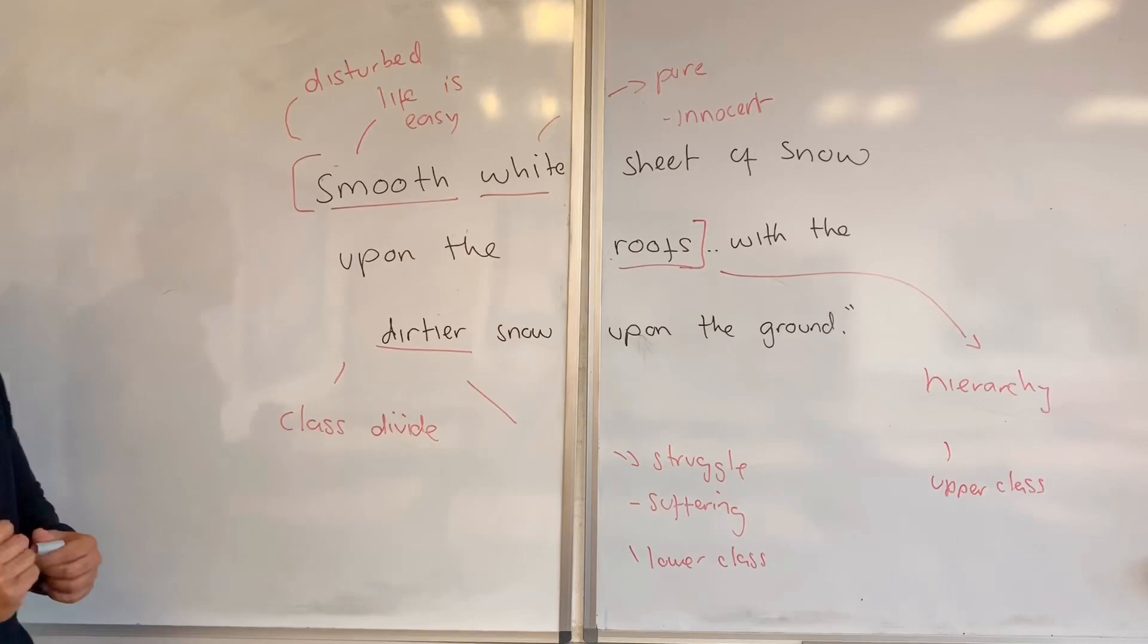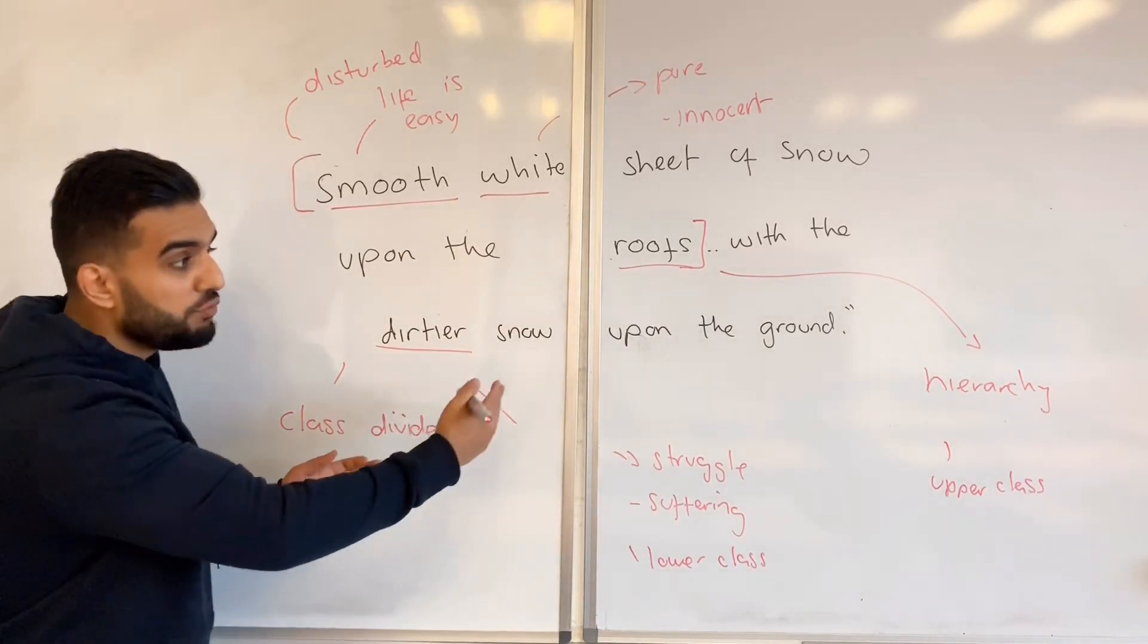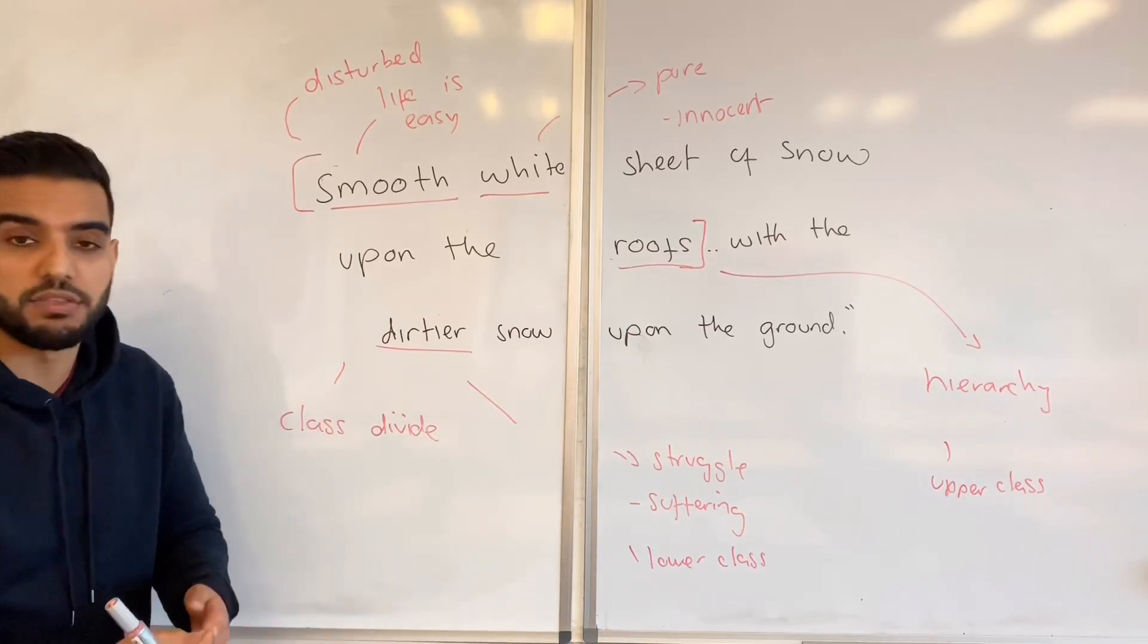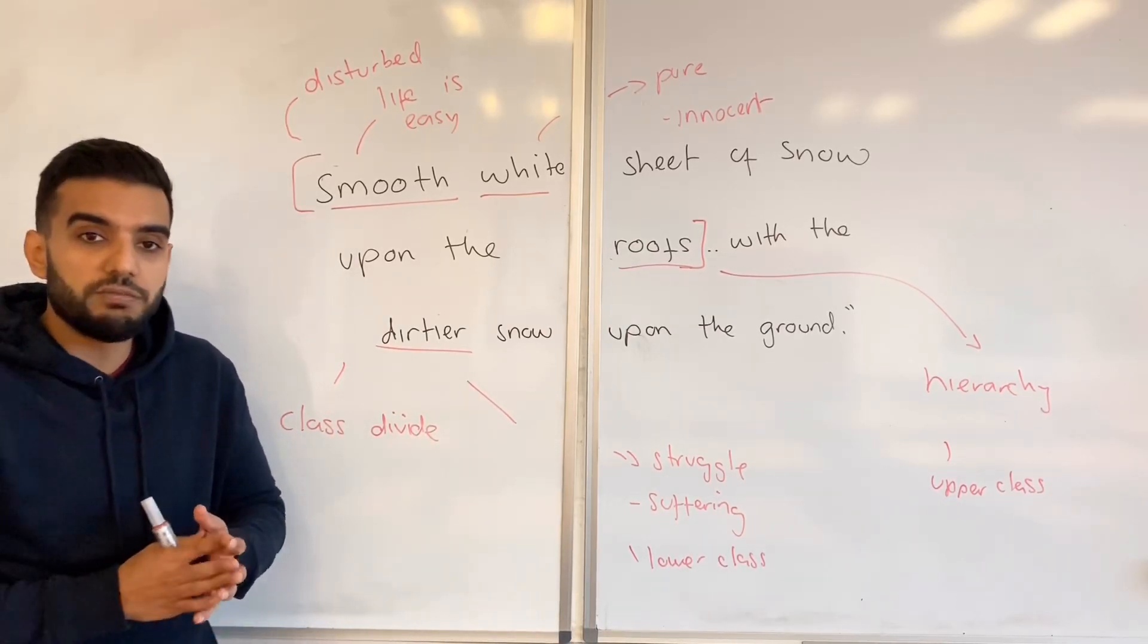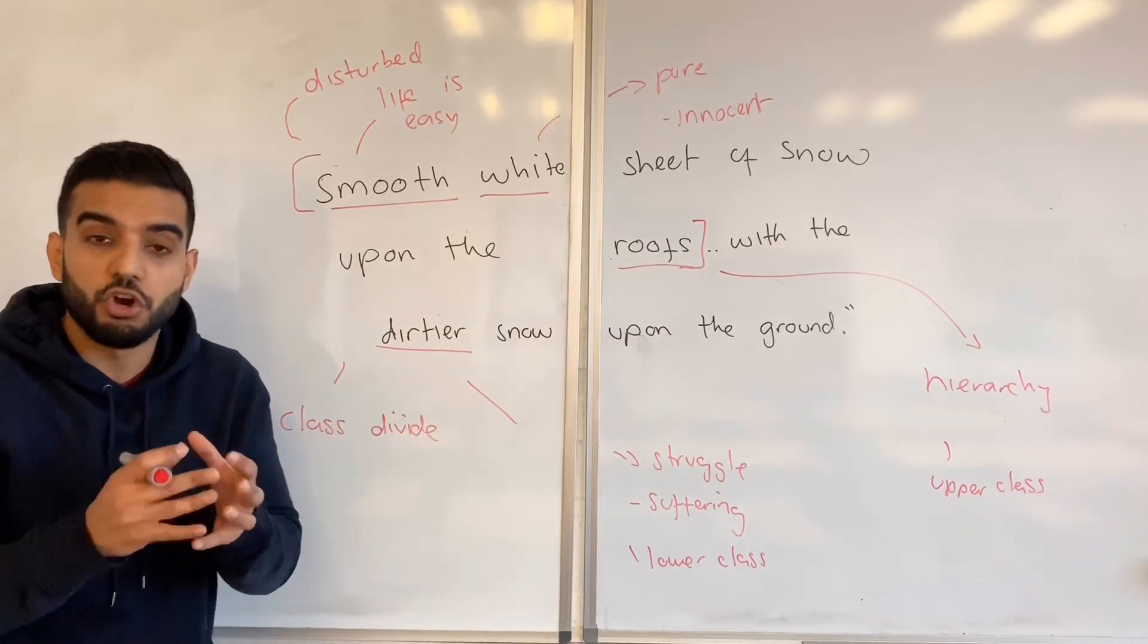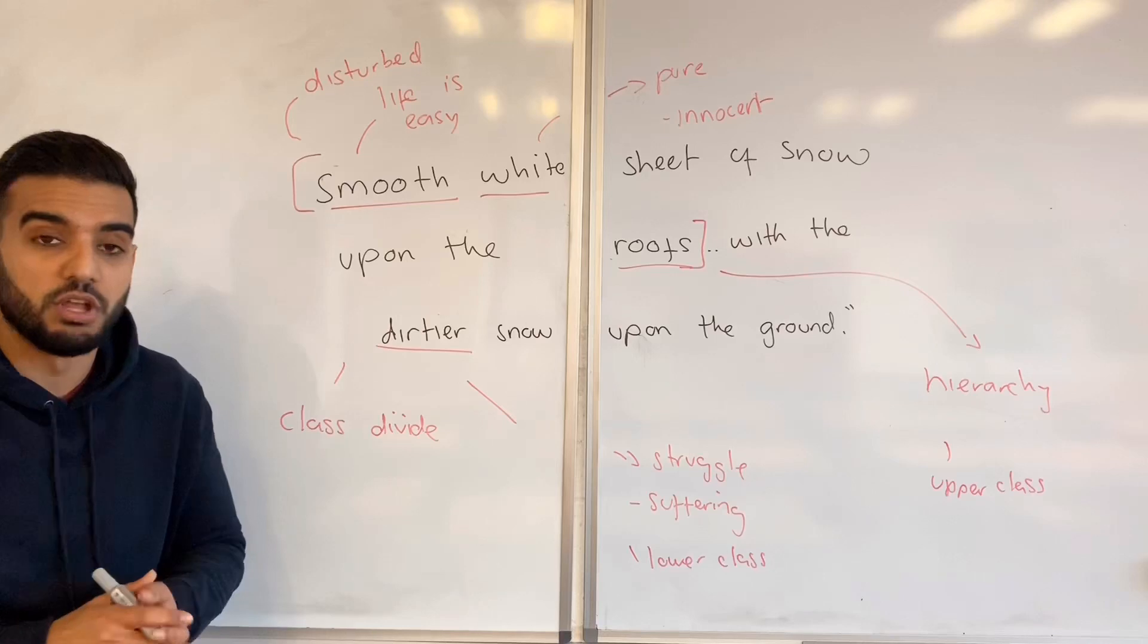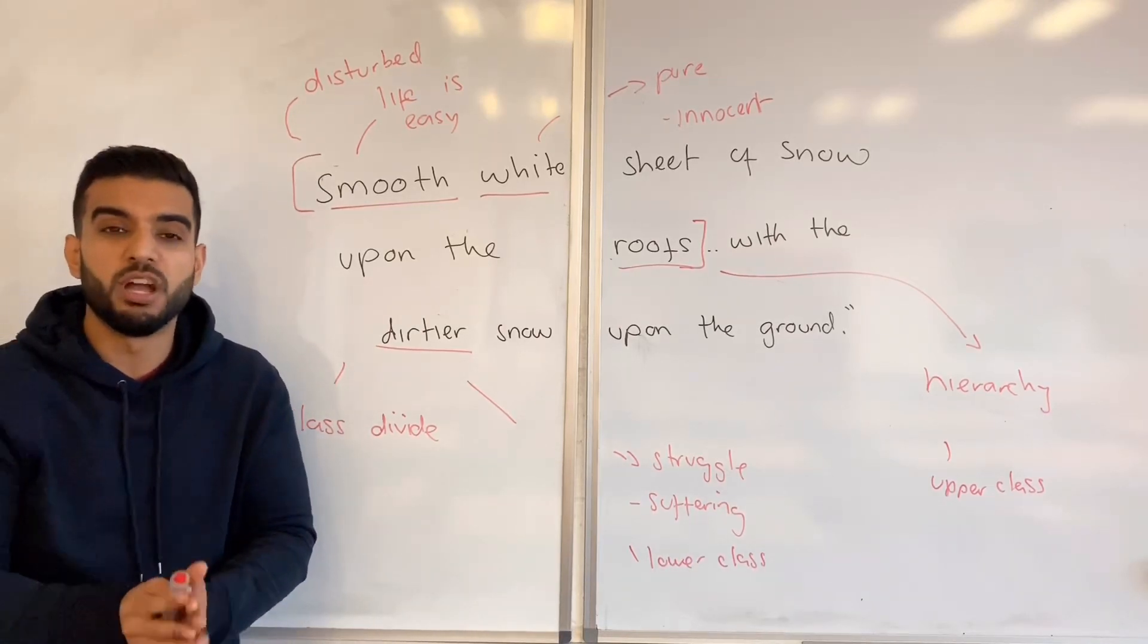Now look how we've linked a very basic quote to the class divide in A Christmas Carol. If you read this quote from the extract, it talks about how the wheels are completely destroying the snow. Therefore, use the snow as a symbolic message of the class divide in A Christmas Carol, whilst the upper class are sitting and relaxing, but the poor are suffering.